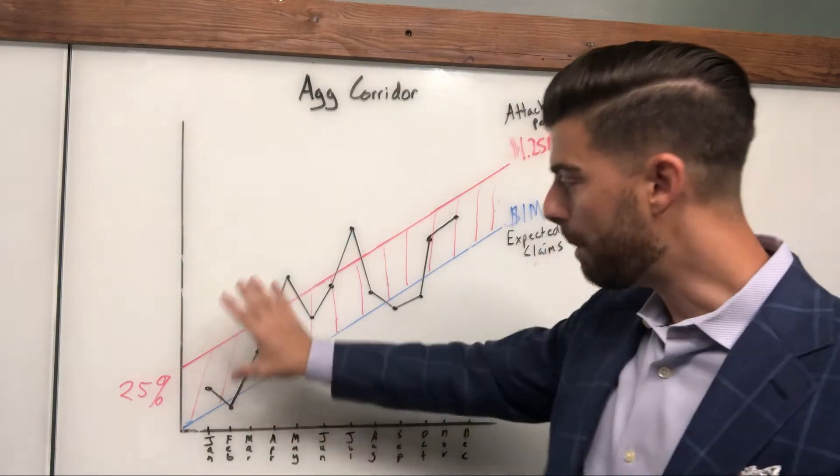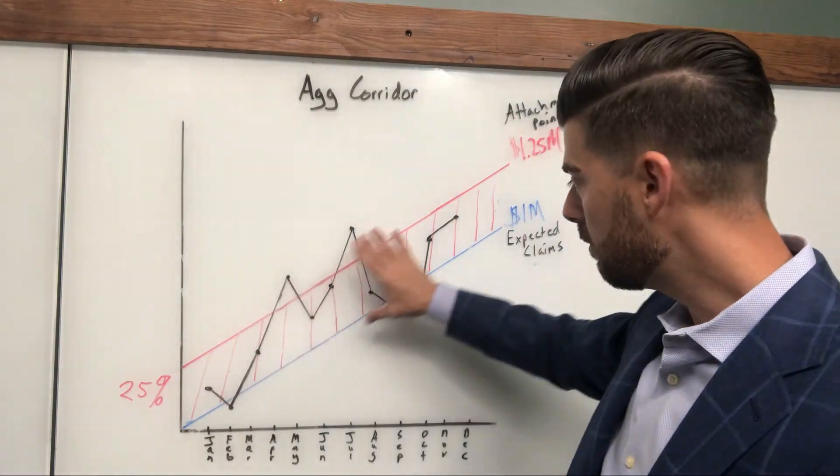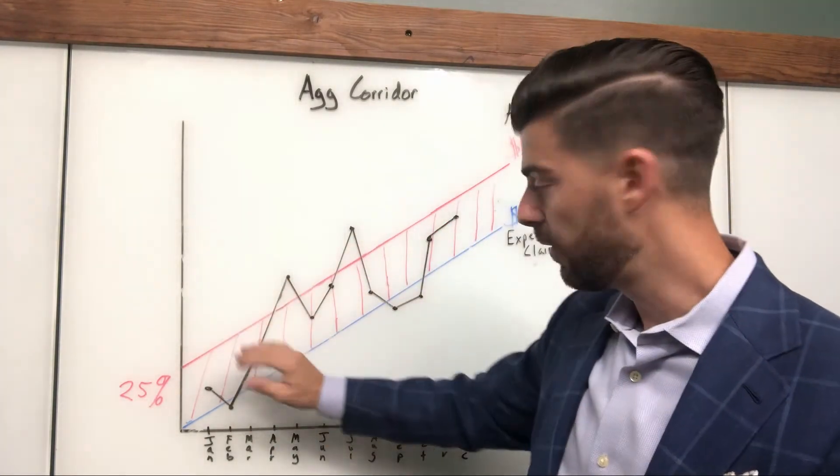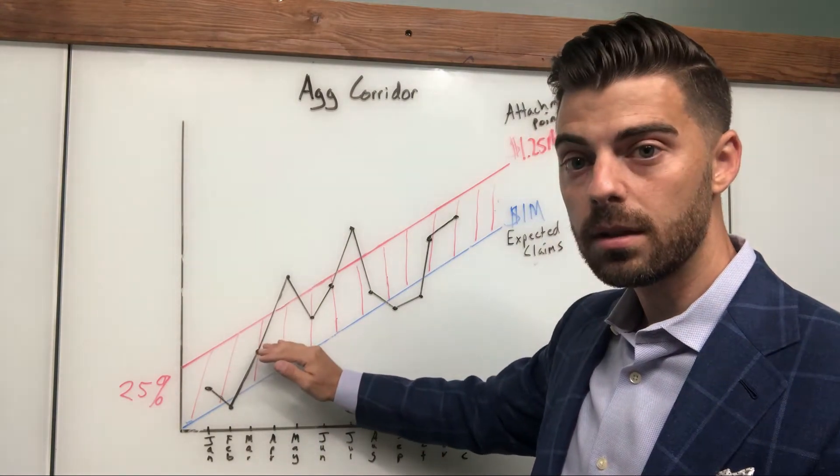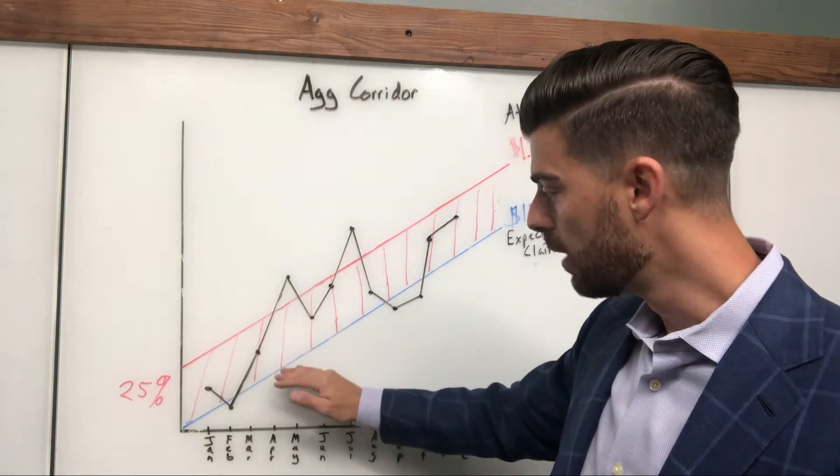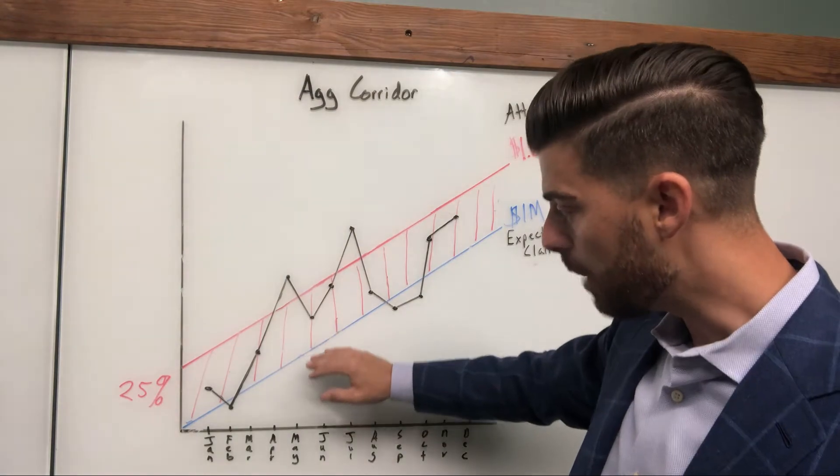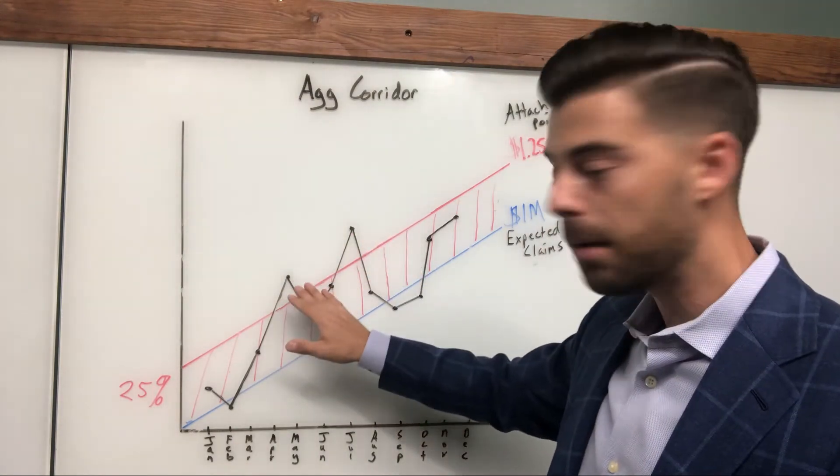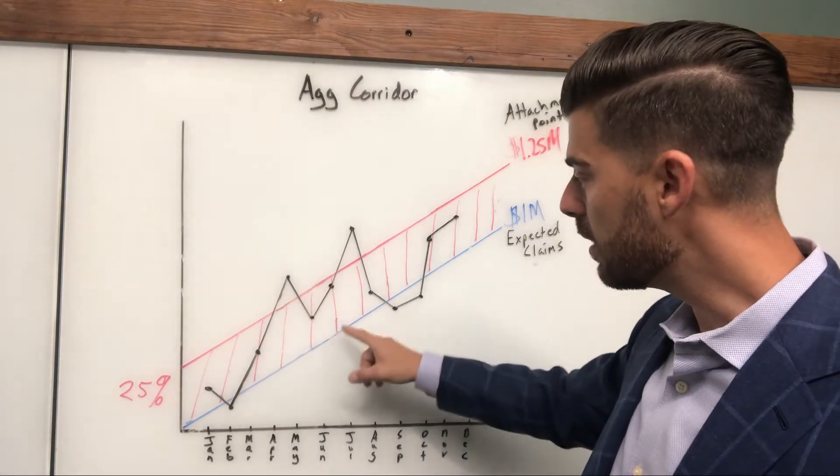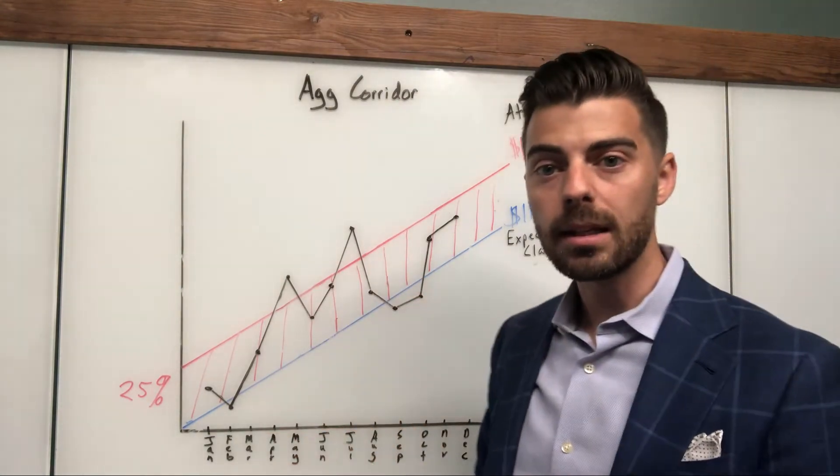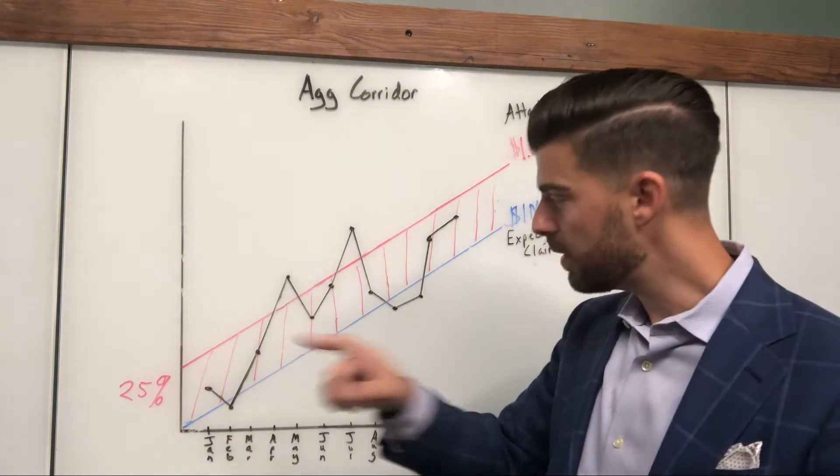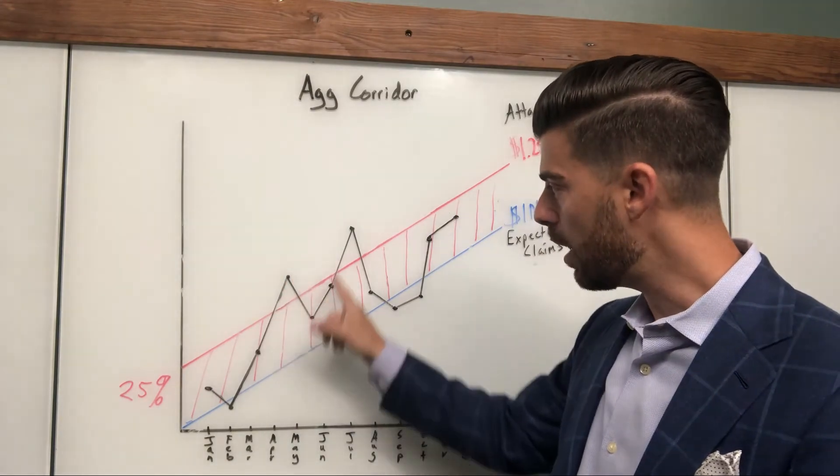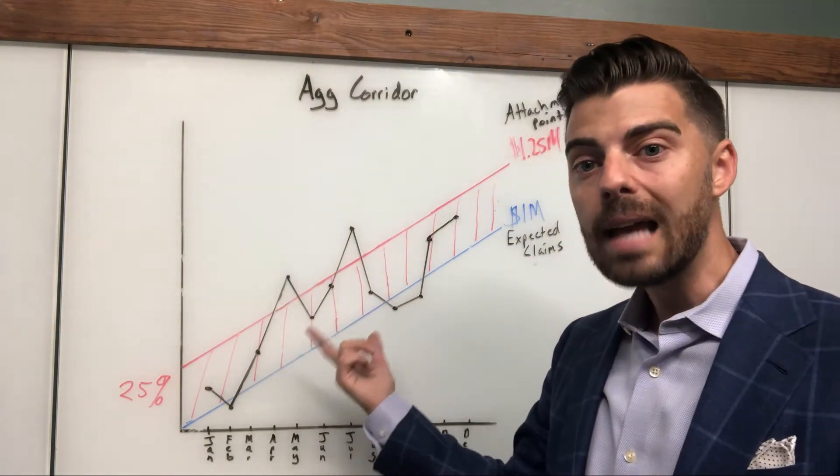You're going to budget monthly in a predictable manner, somewhere based on what your consultant has advised, maybe slightly below, somewhere between these numbers. You're not going to budget above the maximum liability, of course. But this is an illustration of what those monthly claims will look like. Now, in this illustration, you could see there's a couple times that they've exceeded the aggregate corridor.